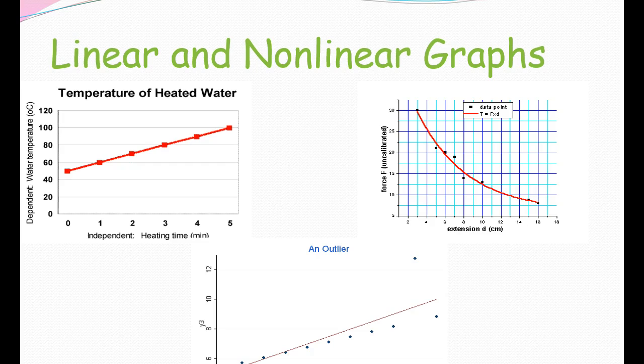It shows maybe the extension—it looks like distance—and as distance increases, force decreases. Now if we look at the one on the bottom, that shows an outlier. The outlier is right here, so that's your outlier.